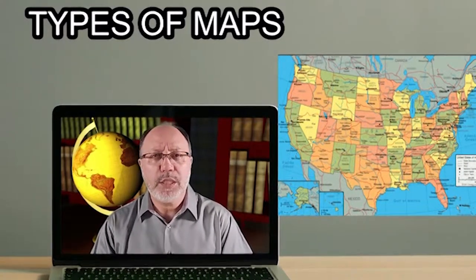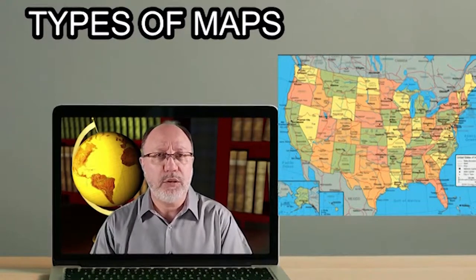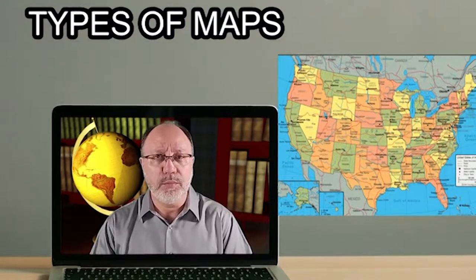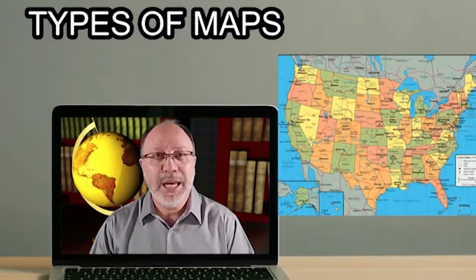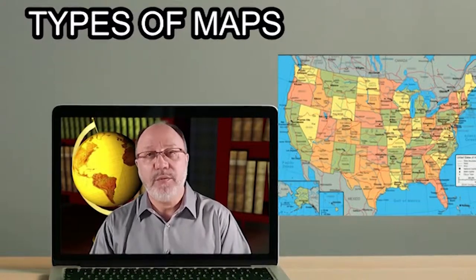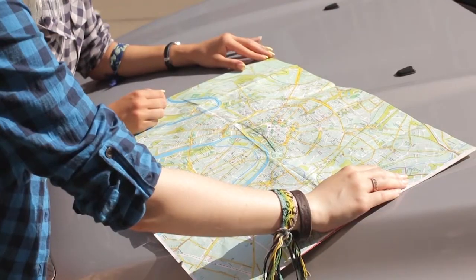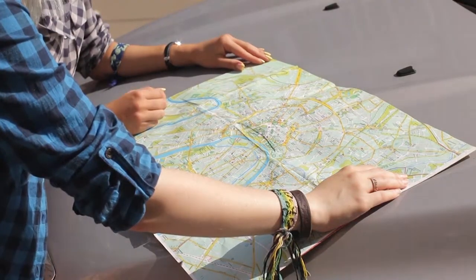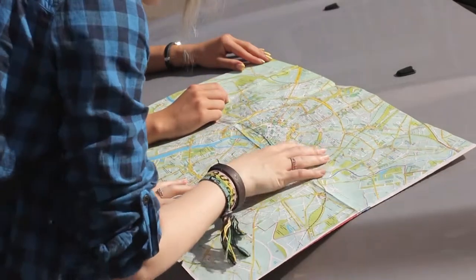Political maps help people understand the geography of the world. They are often the first type of map that students are introduced to in school. They are also known as reference maps because people refer to them again and again as they have questions.